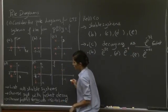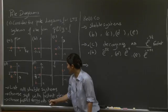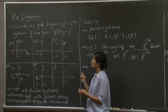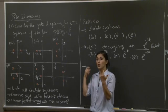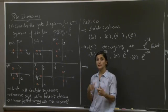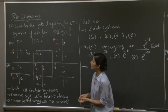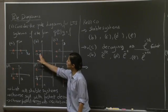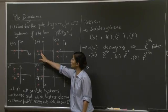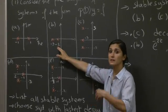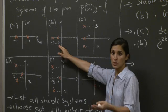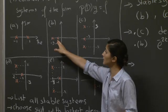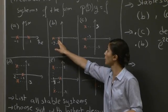The last question: choose the fastest decay without oscillations. We now need to pay attention to whether the poles lie on the imaginary axis, the real axis, or somewhere in between. Examining only the stable cases, system B has both poles on the real axis, giving pure exponential decay — e^(−2t) and e^(−3t) — with no oscillations, since these poles have no imaginary part.